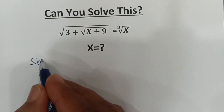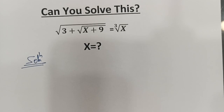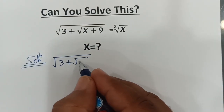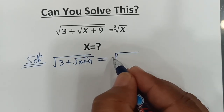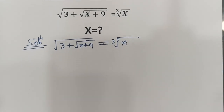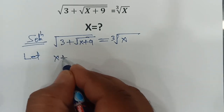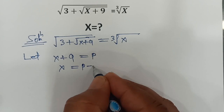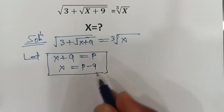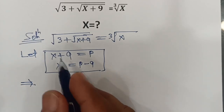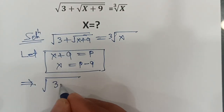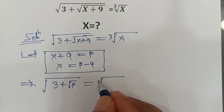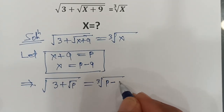So we have this equation: square root of (3 plus square root of (x plus 9)) equals cube root of x. Let x plus 9 equal some variable p, so x equals p minus 9. Then this equation becomes: square root of (3 plus square root of p) equals cube root of (p minus 9).